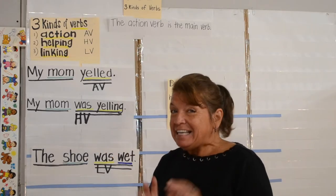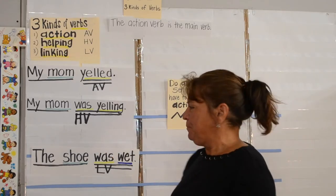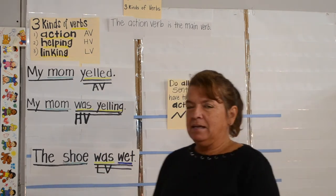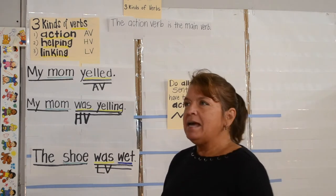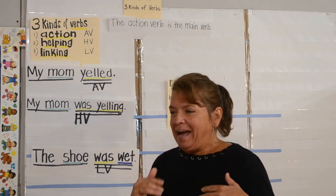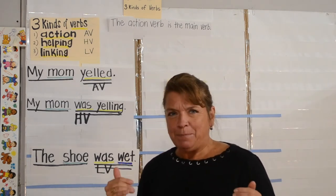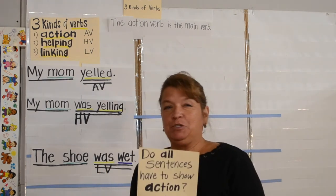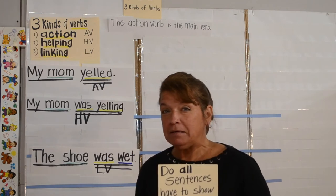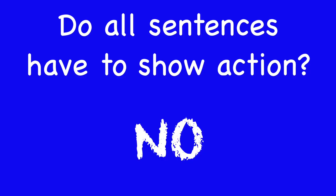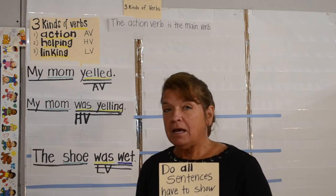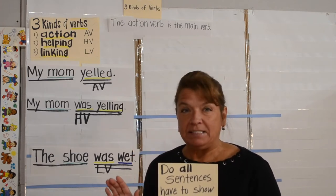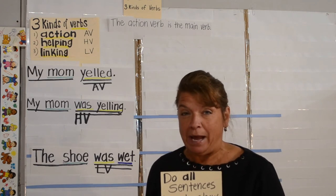Third sentence — this one can be tricky: the shoe was wet. Children have this certain sense about them, and when I ask them, do all sentences have to show action? It takes them a moment to answer because they're thinking, wait, is this a trick question? Of course all sentences have to show action.